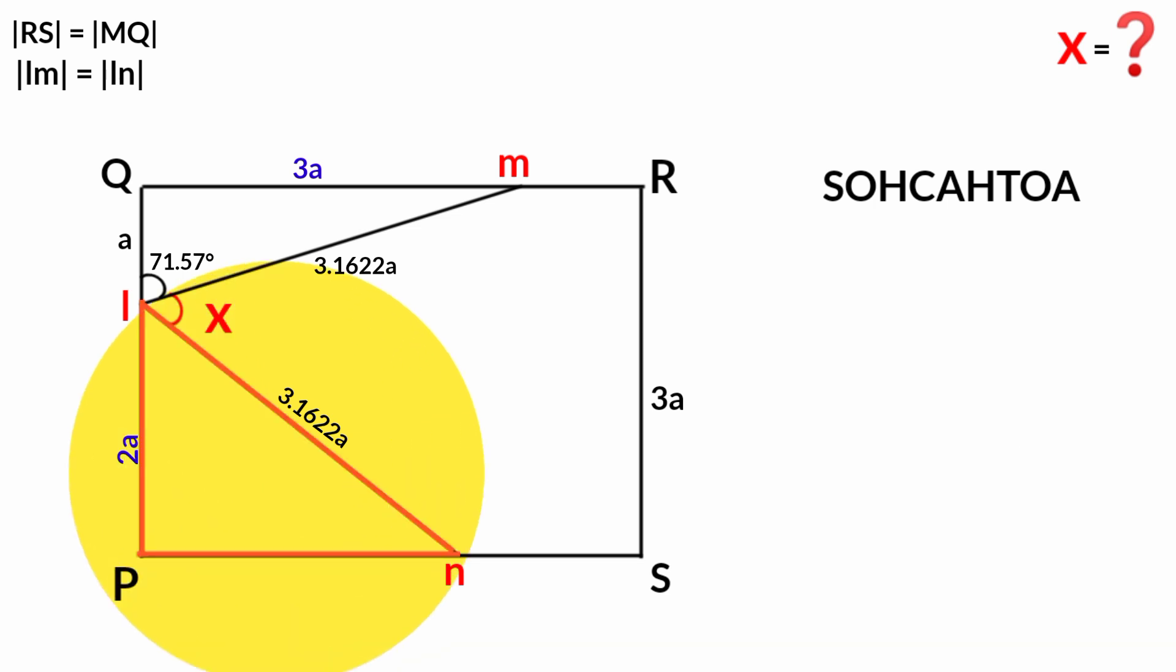From this triangle, it is also a right angle triangle because of this angle here. We can still use SOH CAH TOA on it to find the size of this angle if we take it as theta.